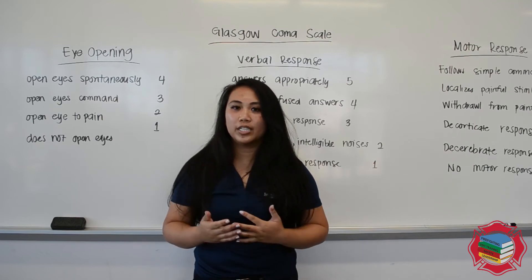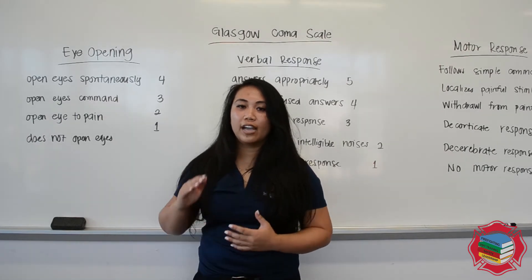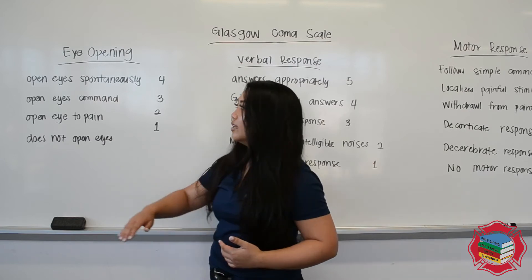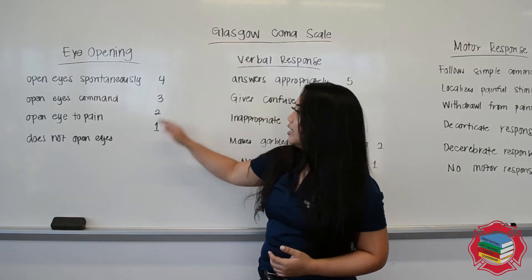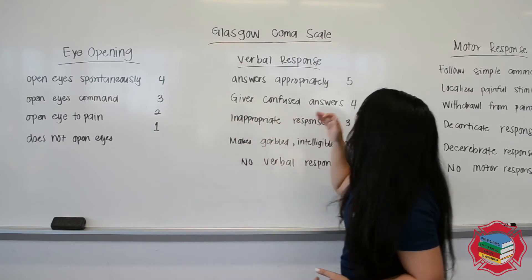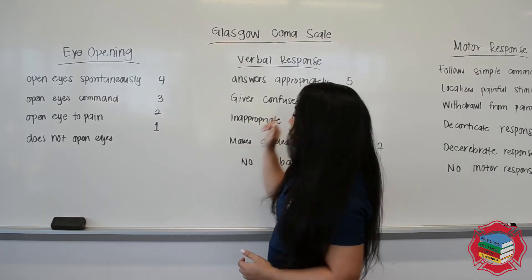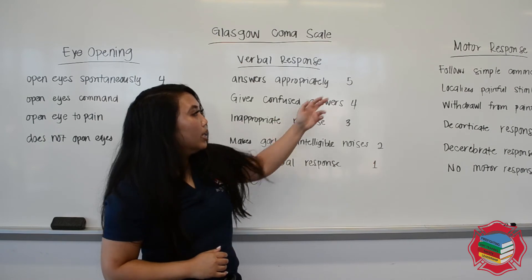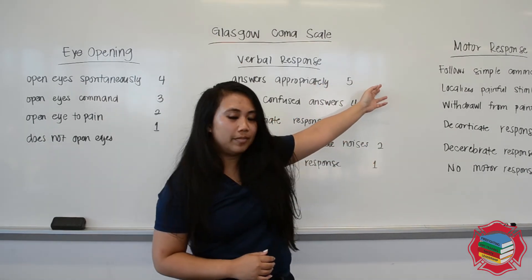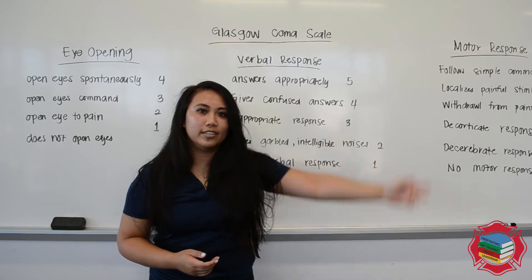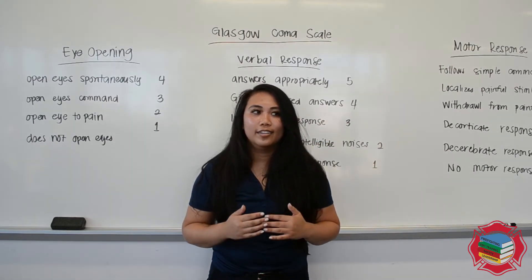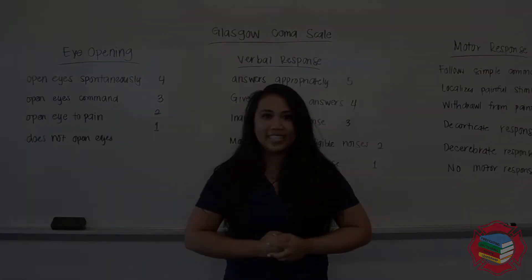For example, if your patient gets a 13, you're going to have to specify in each category what the score was. For example, eyes is a 3 — they only open on command. Verbal is a 4 — gives confused answers. Motor is a 6 — follows commands. So it equals 13. You have to specify why your patient did not get a 15.